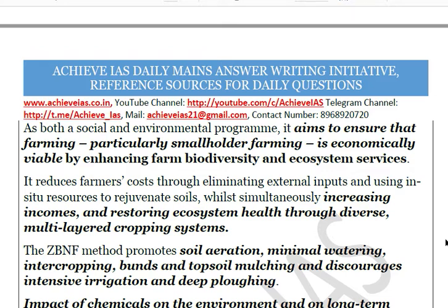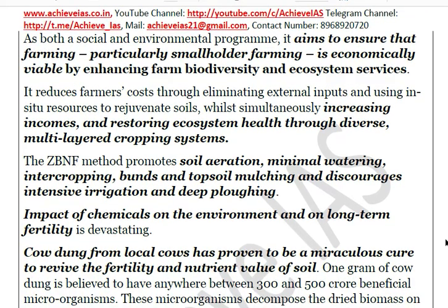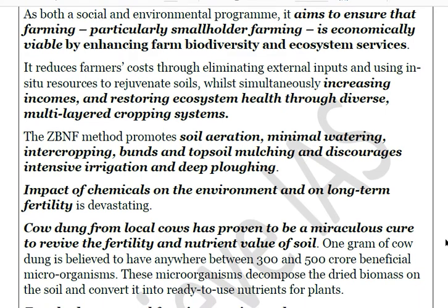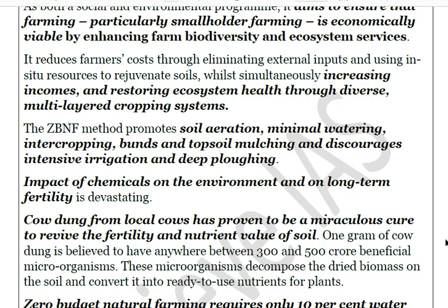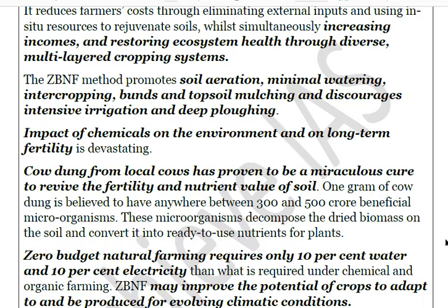ZBNF reduces farmers' costs by eliminating external inputs and using in-situ resources to rejuvenate soils. This increases incomes as productivity improves through natural techniques, and ecosystems and biodiversity are restored through diverse multi-layered cropping systems. It promotes soil aeration, minimal watering, intercropping, and topsoil mulching, while discouraging intensive irrigation and deep plowing — keeping soil structure intact, preventing soil erosion, oxidation, and the long-term fertility damage caused by chemicals.